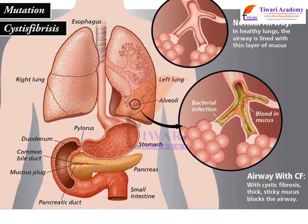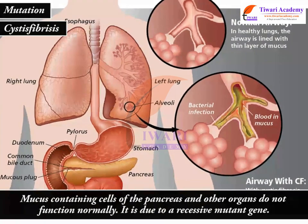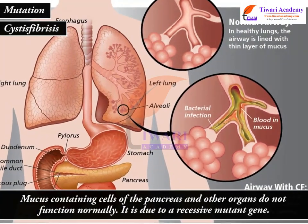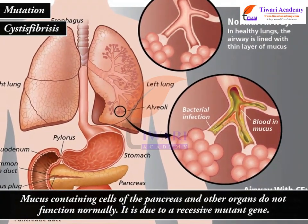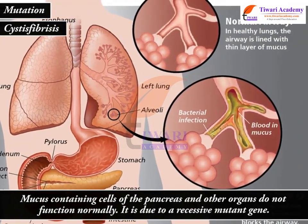Cystic fibrosis: mucus-containing cells of the pancreas and other organs do not function normally. It is due to a recessive mutant gene.